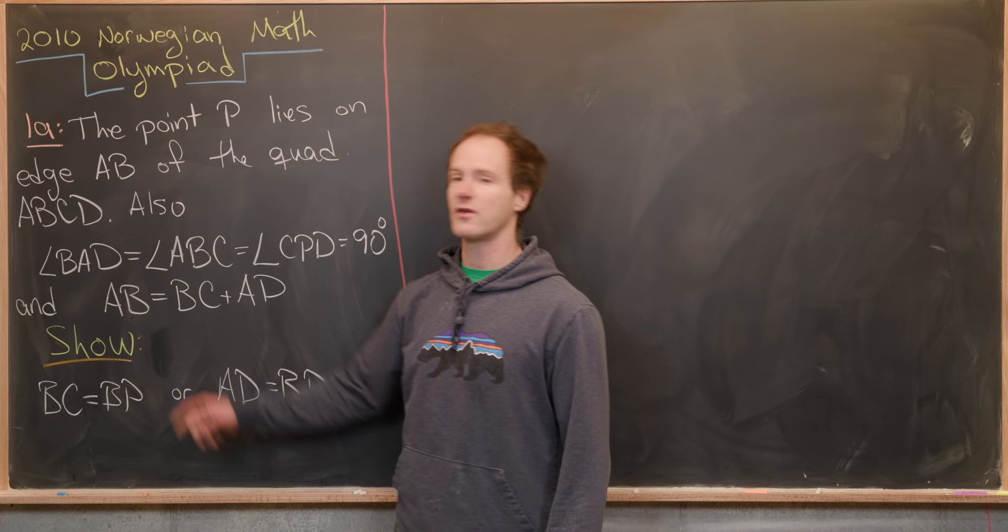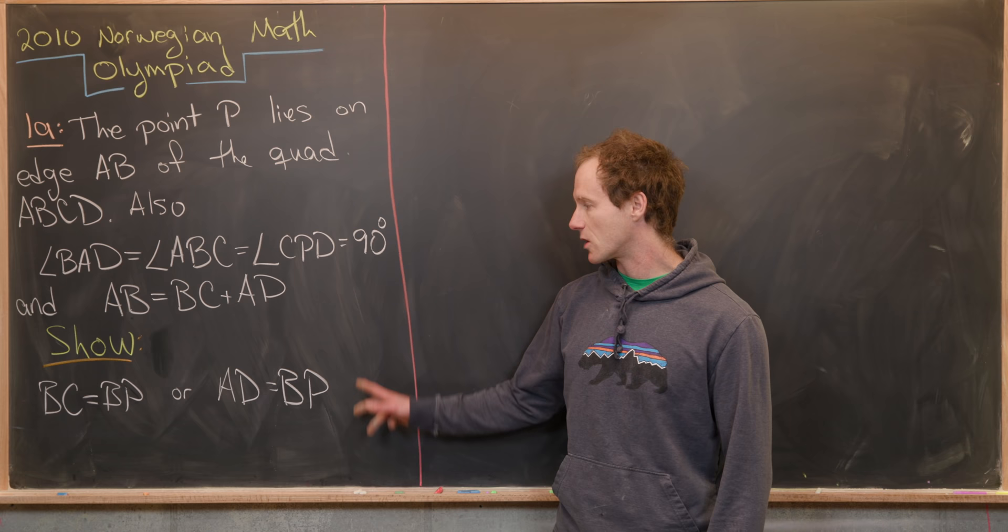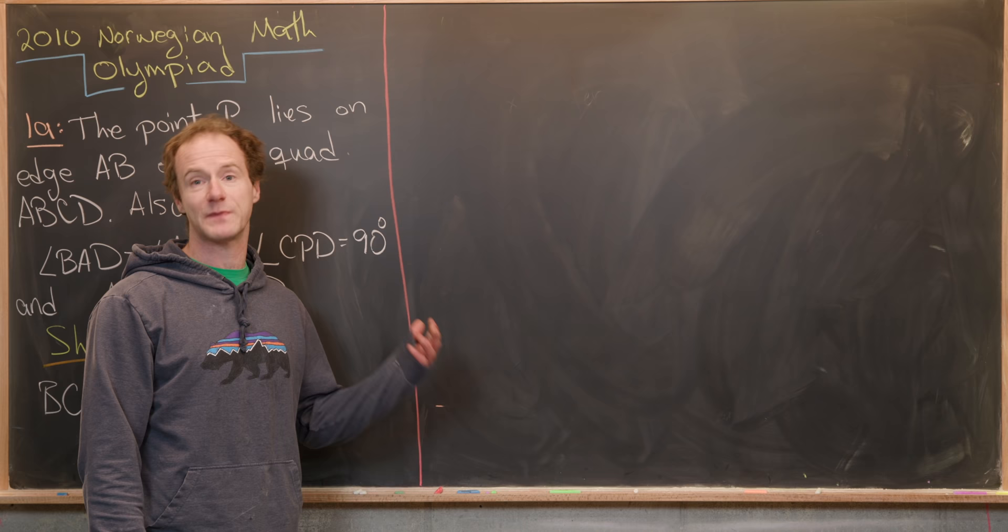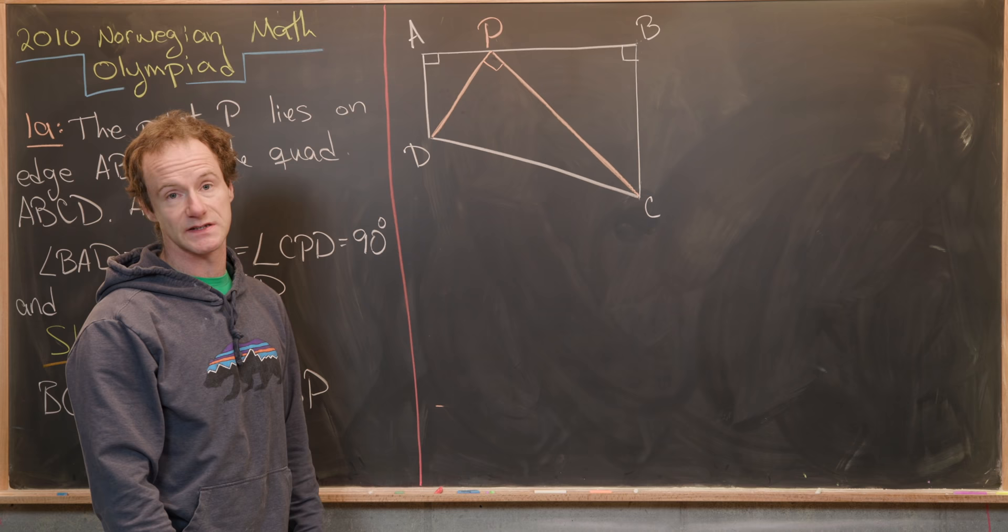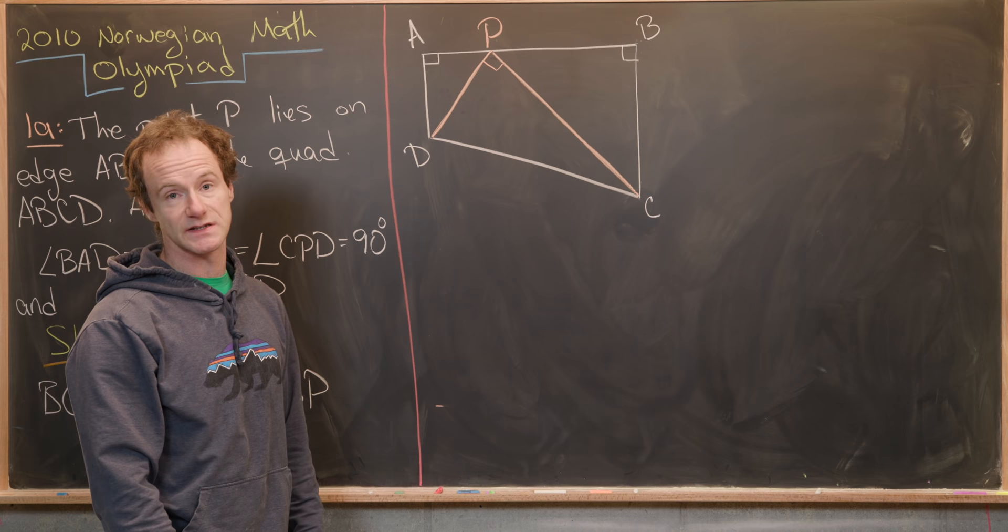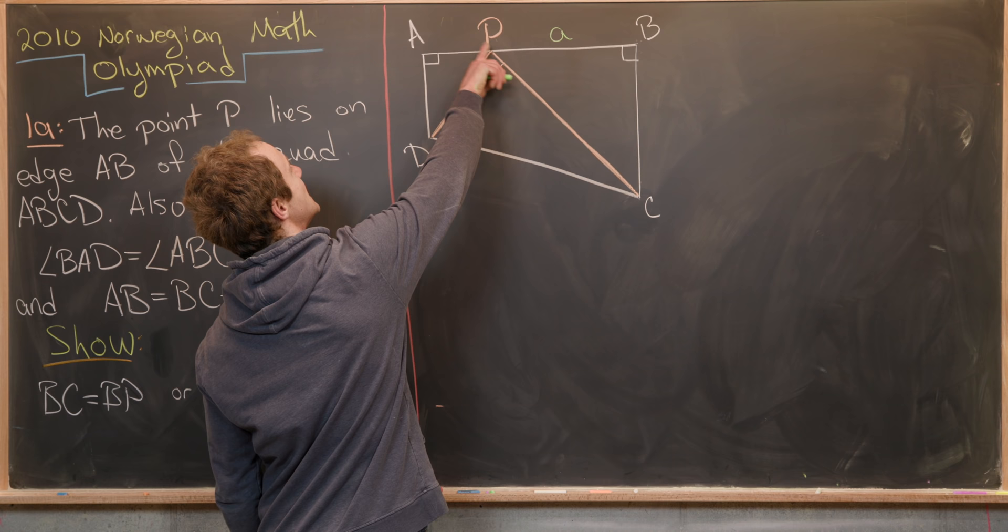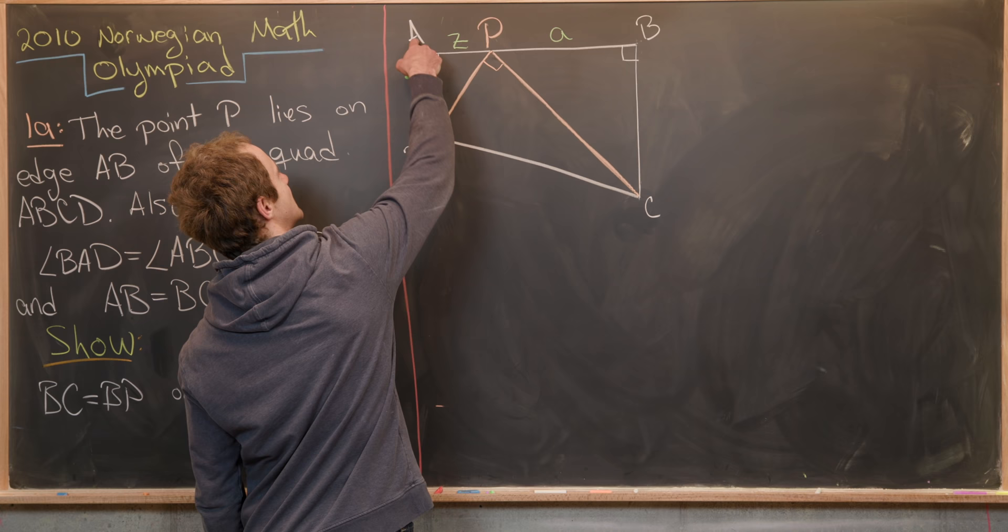Furthermore, we know that AB, in other words, the length of that line segment, is equal to BC plus AP. And our goal is to show that BC equals BP or AD equals BP. So let's maybe get a picture of this on the board real quick, and then we'll jump into the solution. So I think this is a pretty good picture that replicates the data that's given to us in the problem. Now I'm going to start labeling some things. I'm going to say the length of the line segment BP is little a. And then I'm going to say that the length of the line segment PA or AP, maybe we'll call that Z. I'll call this line segment AD X, and I'll call the length of line segment BC Y, like that.